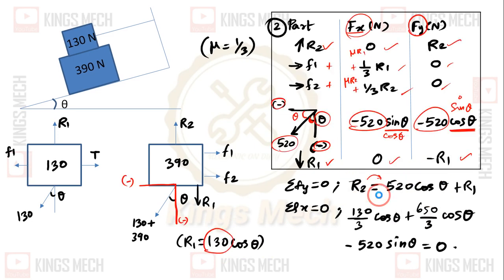We will get R2 = (650 + 650*cos(theta))/3, which equals (650*cos(theta)). F2 = (1/3)*R2 = (1/3)*(650/cos(theta)) = (130 + 650)/(3*cos(theta)) = 780/(3*cos(theta)).